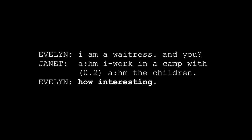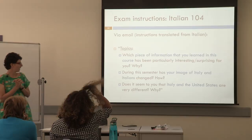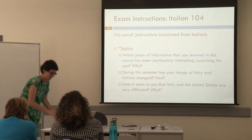Let's look at what happens in Italian 104. Students had to talk about which piece of information learned in the course had been particularly interesting or surprising, whether during the semester their image of Italy and Italians had changed and how, and whether they think there are similarities or differences between Italy and the United States.